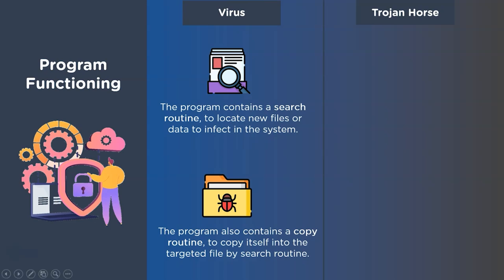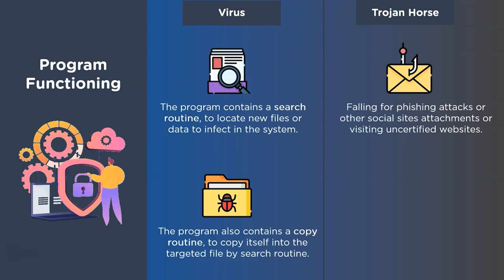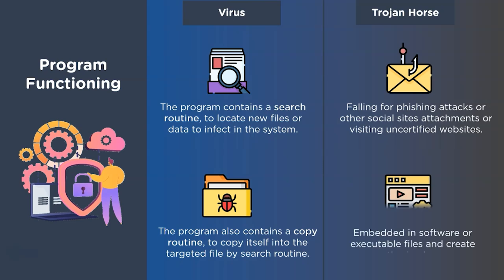For trojan horses, the entryway into a system is through emails that may look legitimate but contain unknown attachments. When such files are downloaded, the trojan program gets installed and infects the system. Trojans also infect systems on execution of an infected application or executable file and attack the system.